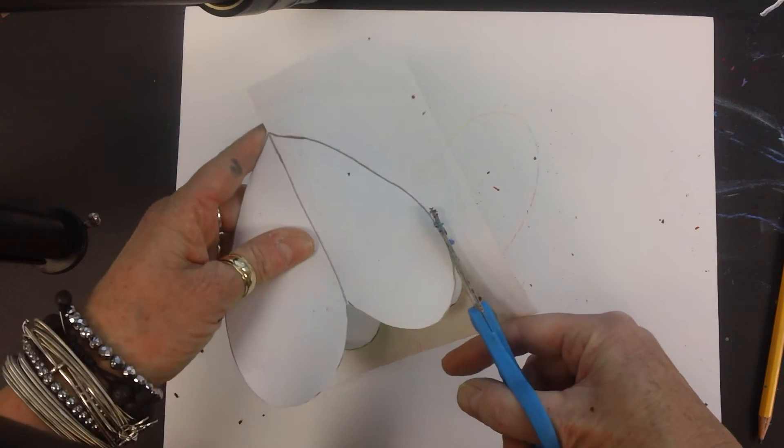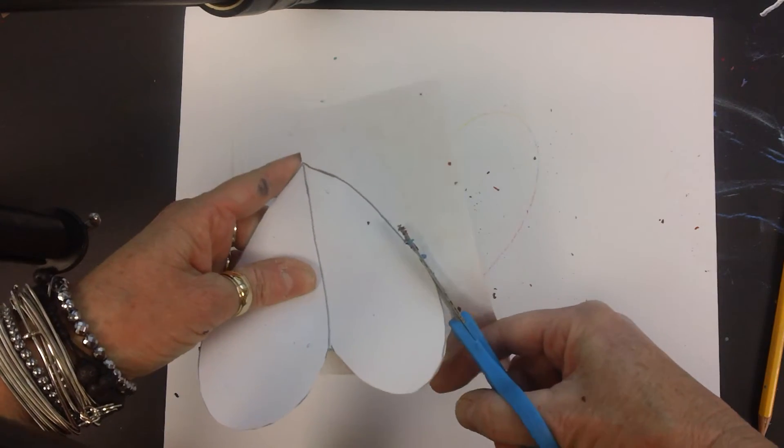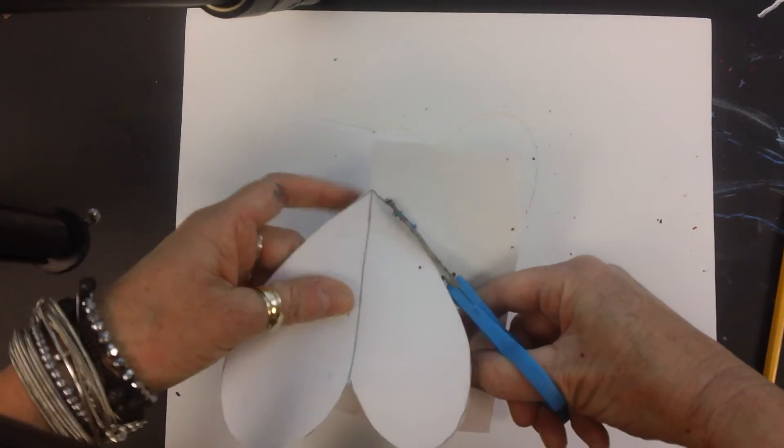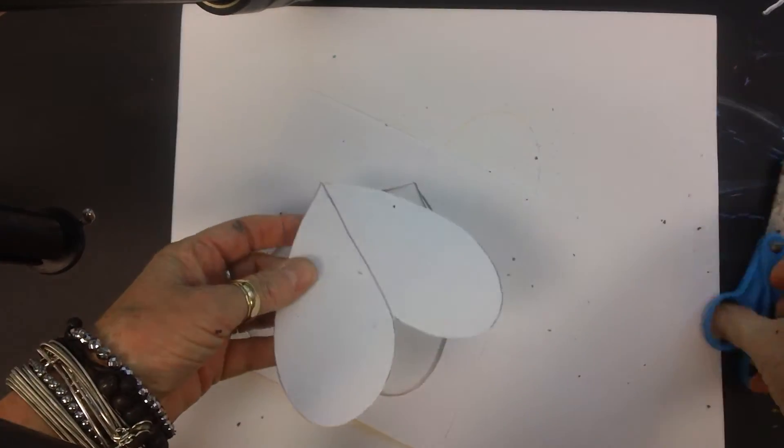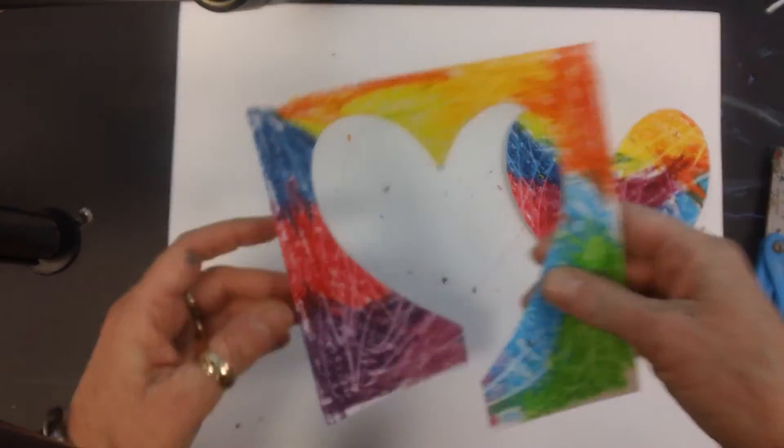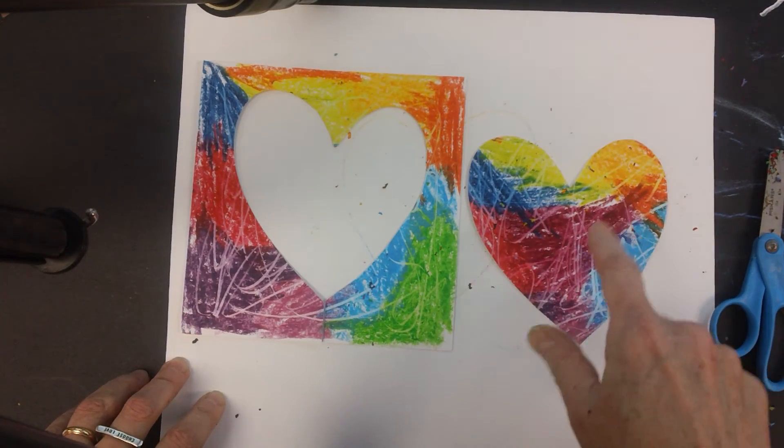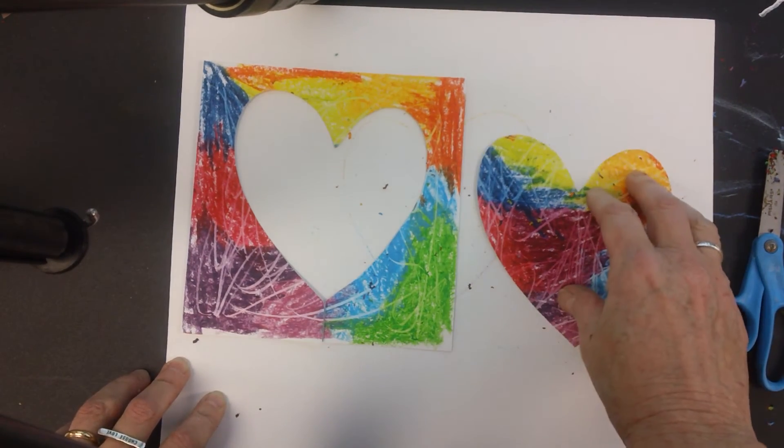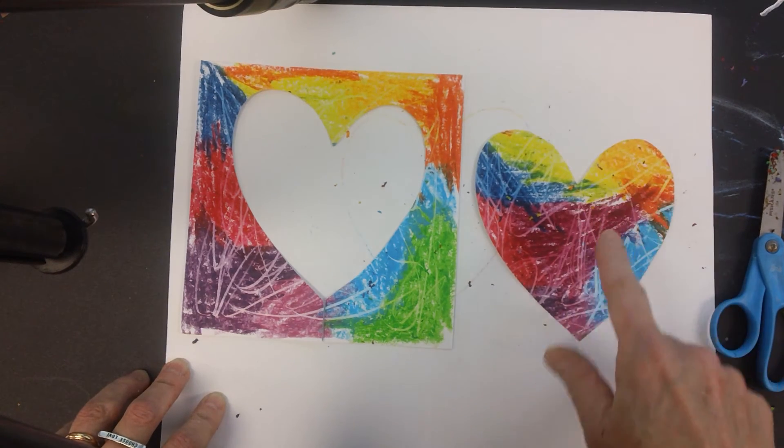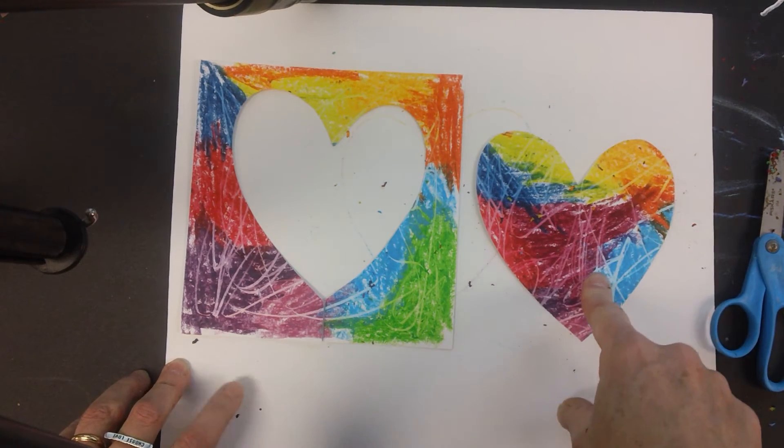So positive and negative space. Positive space is the space an object takes up. So here we have our two pieces. On this side, my heart is taking up the space, so this would be positive space.